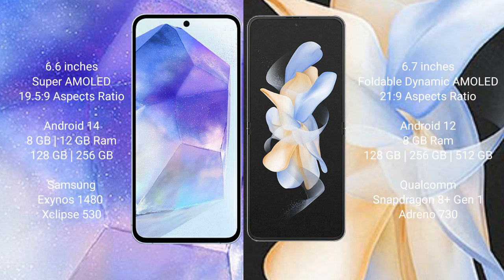Samsung Galaxy A55 comes with 8GB or 12GB RAM, and 128GB or 256GB internal storage. It features the Samsung Exynos 1480 processor and GPU Xclipse 530 chipset.